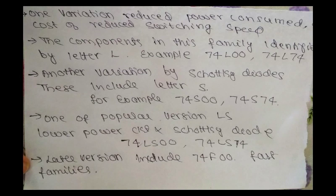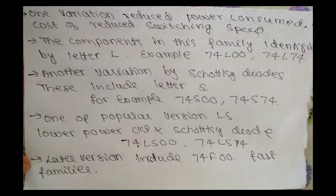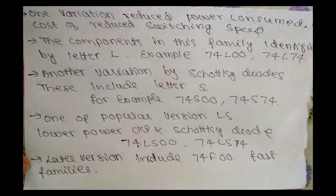One of the most popular variations is the 74LS00 family, which combines lower power circuits and Schottky diodes to yield a good compromise between power and speed, as power and speed are the main considerations in IC manufacturing. Later variations include the 74F00 and 74ALS00 advanced low-power Schottky families. One problem with TTL circuits is that they use bipolar transistors, which have high power consumption even when not switching. CMOS, which uses field-effect transistors, was originally developed around the same time as TTL.